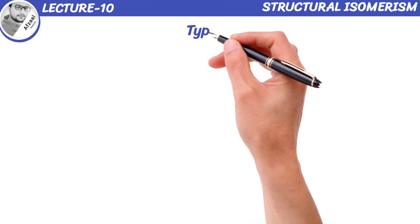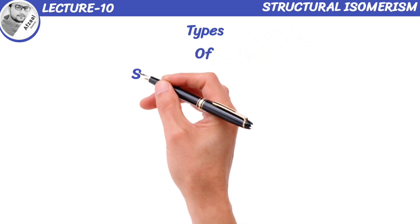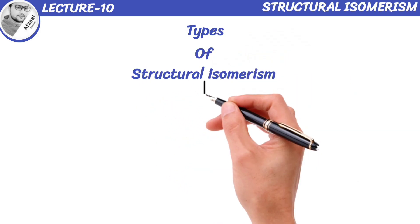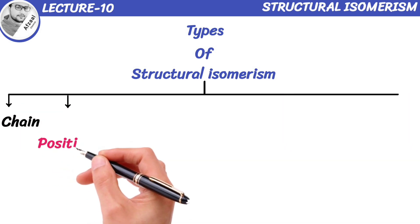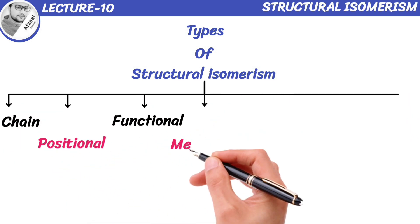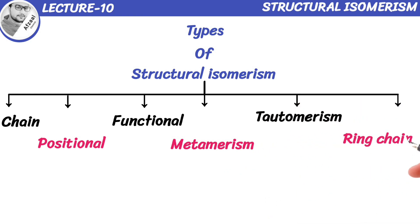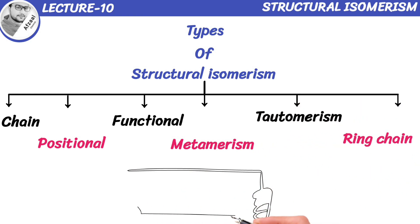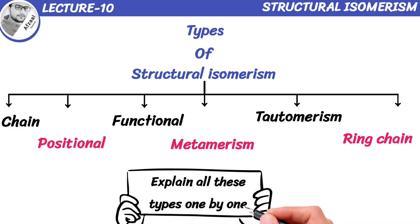Now we are going to discuss the different types of structural isomerism. Structural isomers can be classified into chain isomerism, positional isomerism, functional isomerism, metamerism, tautomerism, and ring-chain isomerism. Let me explain all these types one by one.